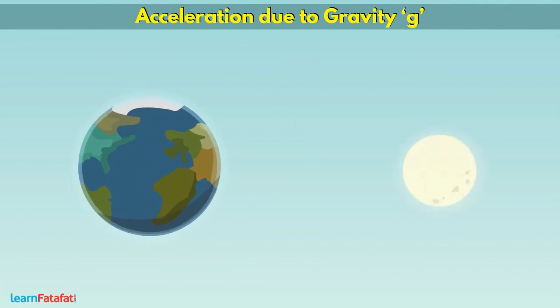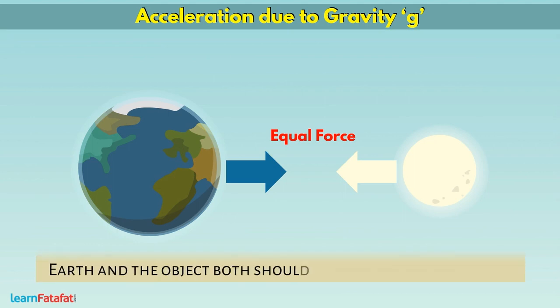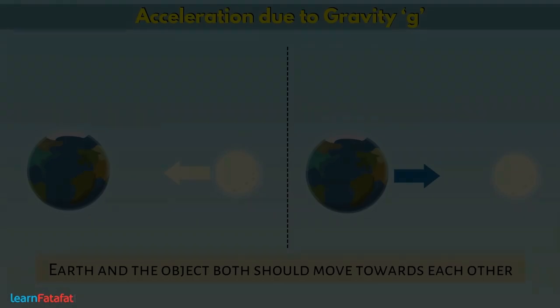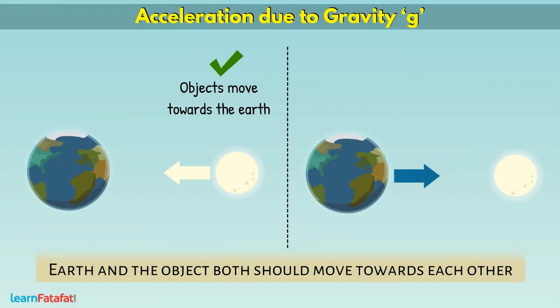If Earth attracts an object towards itself, then that object also attracts the Earth towards itself with equal force. This means that Earth and the object both should move towards each other. But we always see that objects move towards the Earth. We never see Earth moving towards the object. Why is it so?